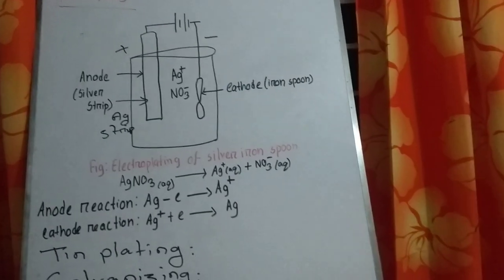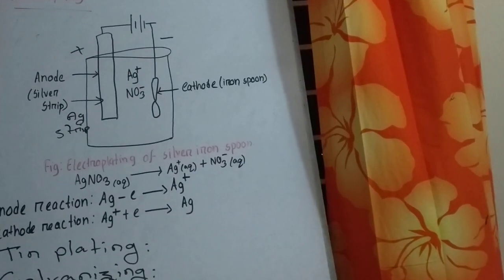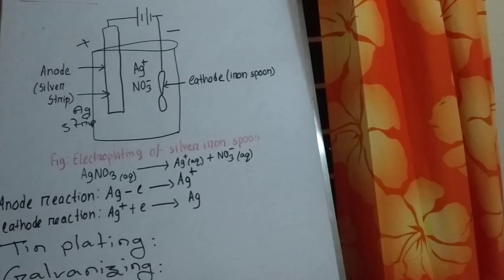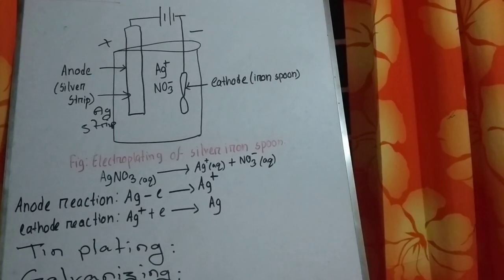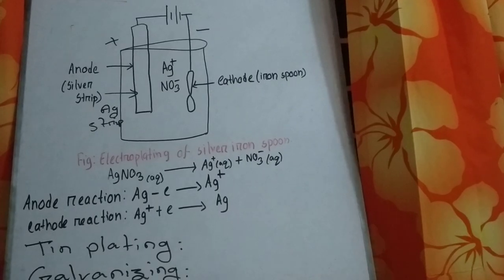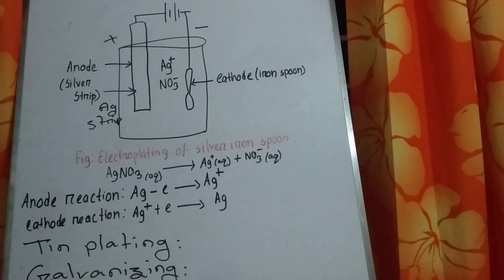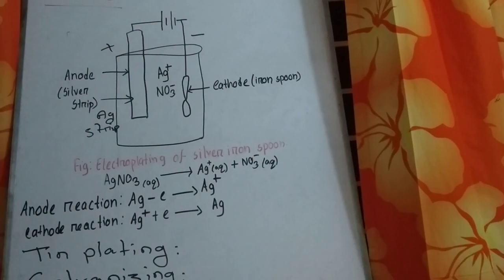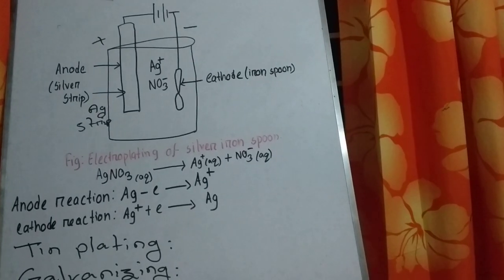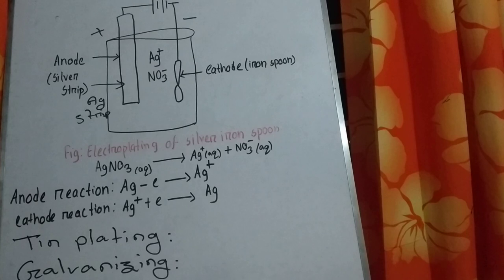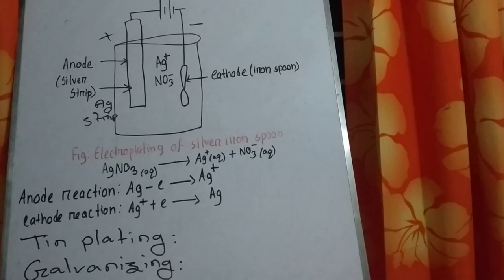The purposes of electroplating are: number one, to protect the metal from corrosion and to increase the brightness of the metal; number two, since less reactive metals do not react with oxygen, electroplating with a less reactive metal is done to protect against oxidation; number three, to increase the toughness and stability of the metal.